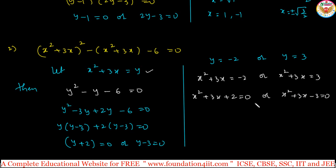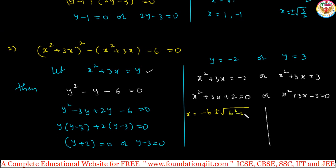Wherever there are possibilities you can apply factorization, or else you can use the formula. x squared plus 3x plus 2 equals 0 or x squared plus 3x minus 3 equals 0. Apply the formula, and you will get 4 answers total.